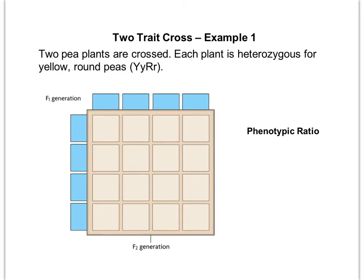Next we're going to try one with two traits. This would be called a dihybrid cross if both parents are completely heterozygous. We're going to look at two different traits: the color of the peas and the shape of the peas. Yellow is dominant to green, and round is dominant to wrinkled. Each parent is going to have the same genotype, using four letters because we're dealing with two traits.